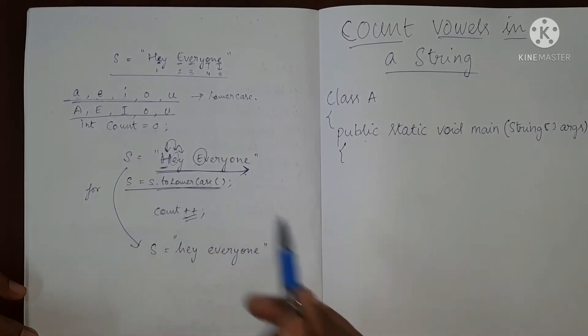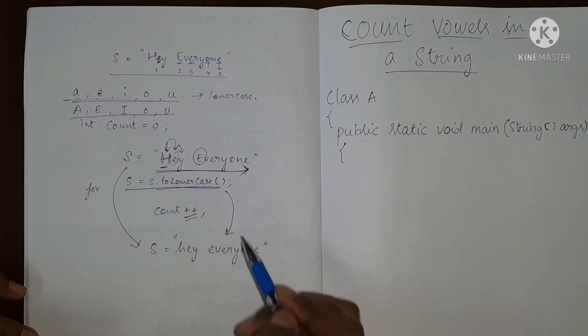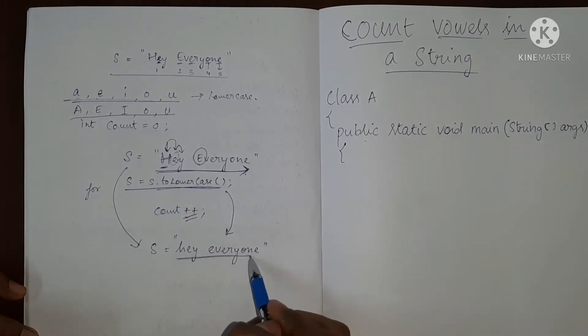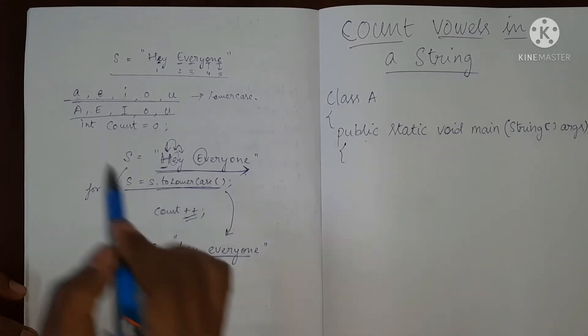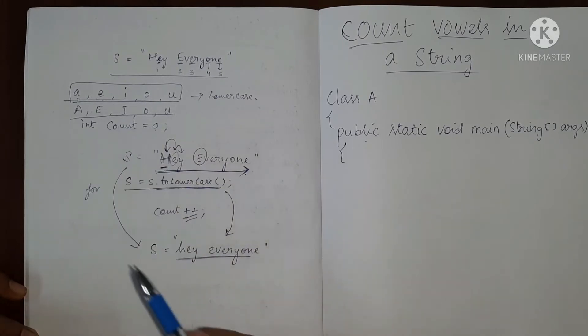This inbuilt method will convert S into a string which has only small letters or lowercase letters. And then now from here, we are going to check for lowercase A, E, I, O, U.